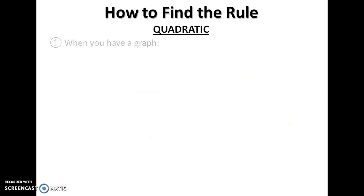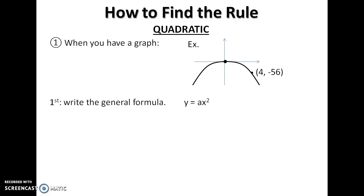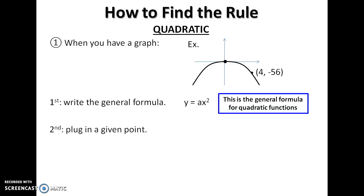How to find the rule? Well, for quadratic, you could either have a graph or a table. In a graph, you'd have to be given one point other than (0, 0). You always start off by writing the general rule for the formula, y equals ax squared for quadratic. And start by plugging in a point other than (0, 0). Plug in both the x and the y.